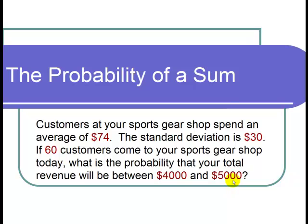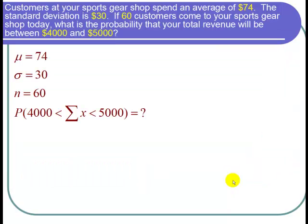Let's start by writing the cast of characters. The average they spend is $74, so μ = 74. The standard deviation is $30, so σ = 30. 60 customers are coming into the shop—that's the sample size, n = 60.